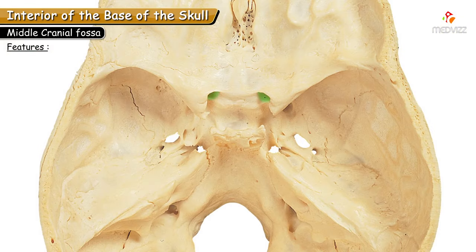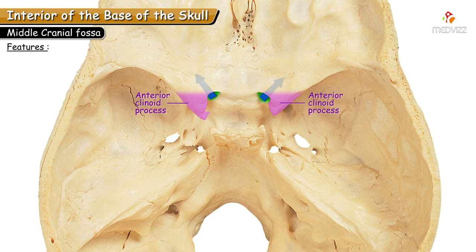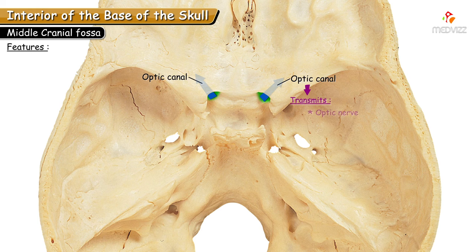There is a canal hiding below the anterior clinoid process called the optic canal, which connects the middle cranial fossa with the orbit. It transmits the optic nerve and the ophthalmic artery. The optic nerve is surrounded by meninges, which continue with the outer layer of the eyeball.